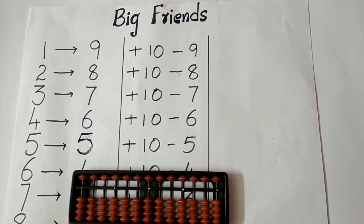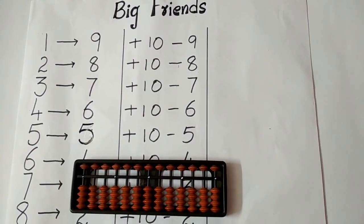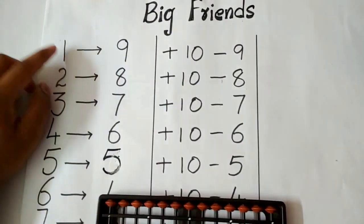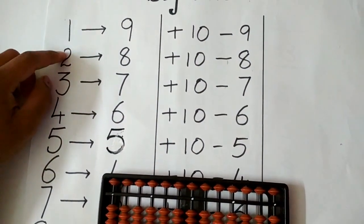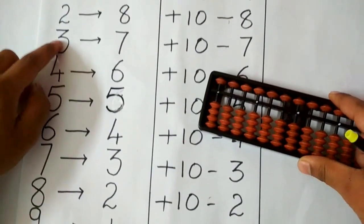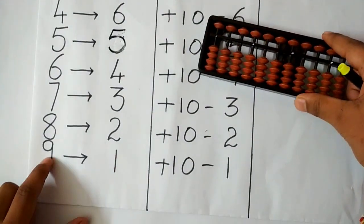We have similar kind of friends in big friends such as 9 is the friend of 1, 8 is the friend of 2, 7 is the friend of 3 and so on. 1 is the friend of 9.